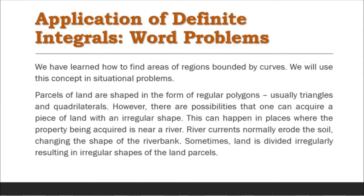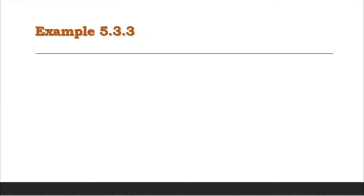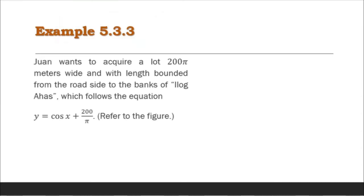This can happen in places where the property being acquired is near a river. River currents normally erode the soil, changing the shape of the river bank. Sometimes land is divided irregularly, resulting in irregular shapes of land parcels. For example, problem 5.3.3: one wants to acquire a lot 200π meters wide, with length bounded from the road side to the banks of Ilog Ahas, which follows the equation y equals cosine x plus 200 over π.